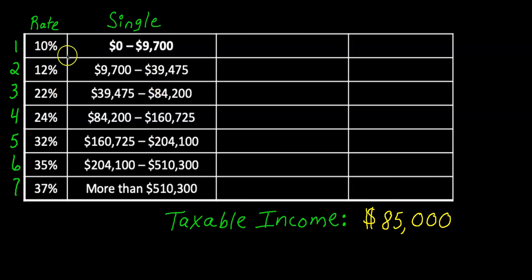So a couple things about this table. You should notice in column one there's the rate and the rates go up as you make more money, and also we are assuming we're happily single in this problem. If you were married these dollar amounts in column two would be different.